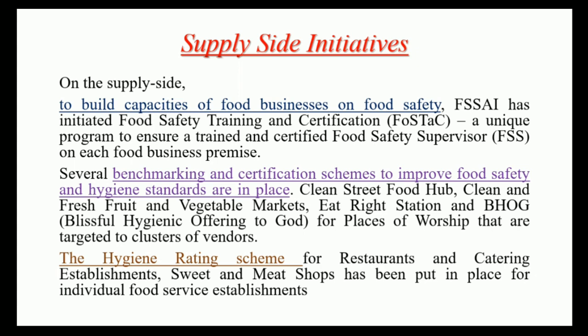Examples include certification of street food vendors, certification of shops which sell fresh fruits and vegetables, certification of places of worship, and certification of railway stations — because they are also a major food hub in our country. Then we have the hygiene rating scheme where restaurants, catering establishments, and different bakery shops are rated so that consumers can make better choices about where they can get safer and healthier food. We will be talking about all these in detail, covering what exactly is the aim and the various methods of registration under all these different schemes.